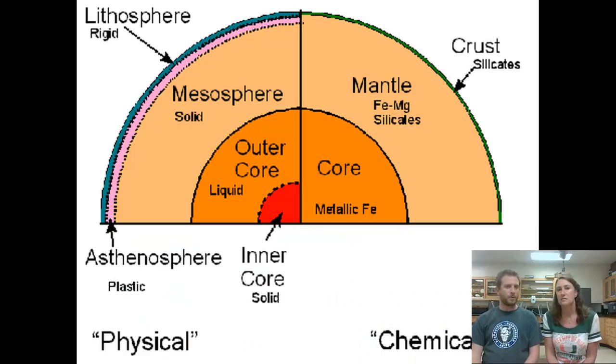Now we're talking about the difference between the physical and chemical layers. We can describe the layers in a couple different ways. If we do it as a chemical way, then we would look at the core, the mantle, and the crust. In the core we would have our metals - sulfur, nickel, iron. And then the mantle would be more iron, magnesium, and the silicates. And then the crust would mostly be a lot more of the silicates.